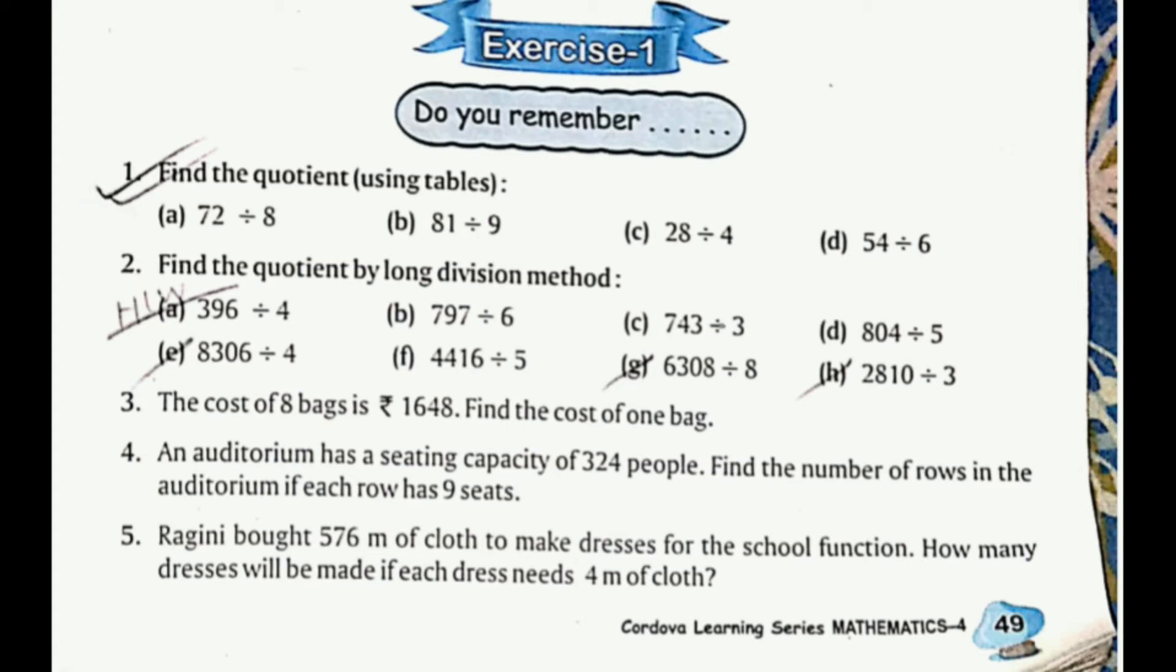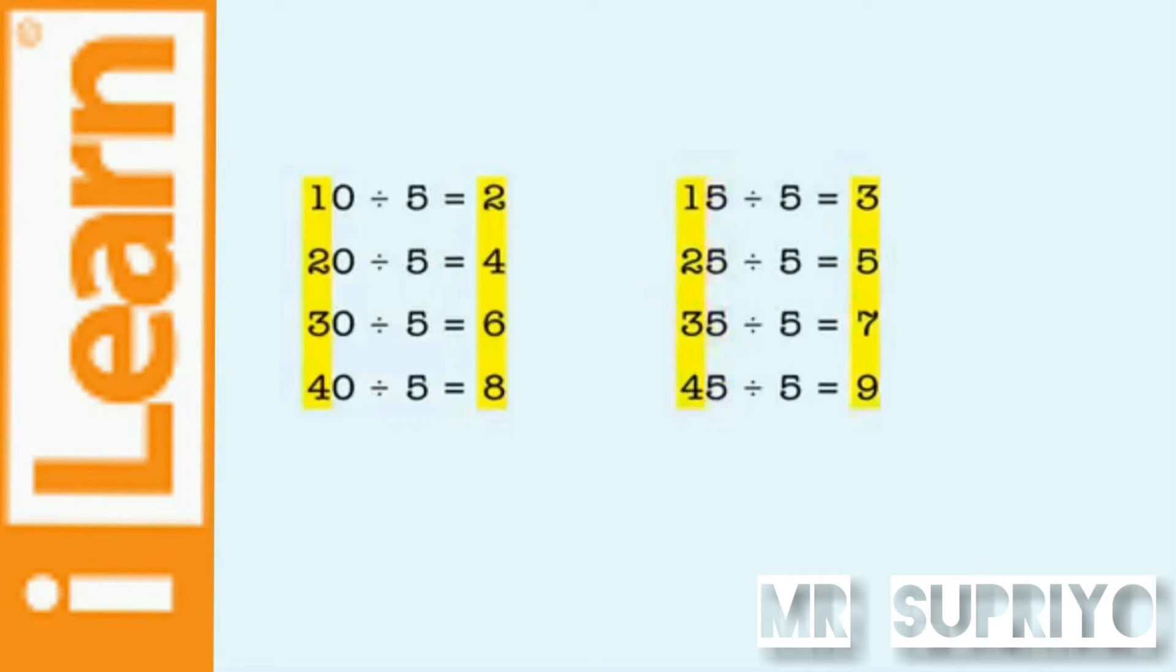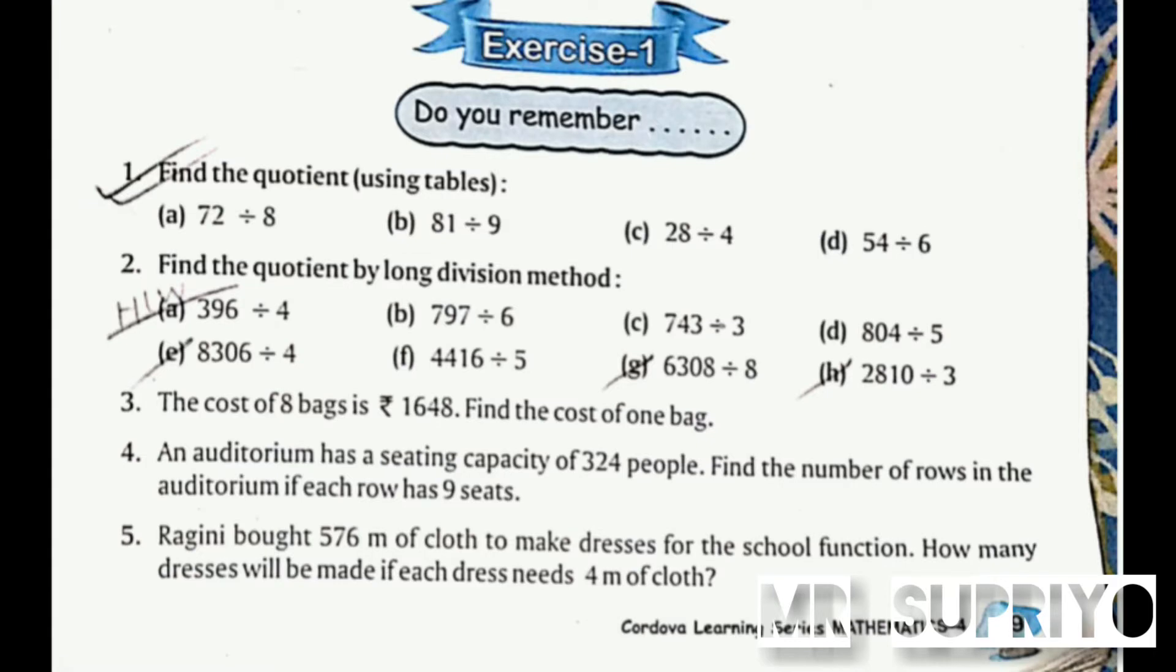Here you can see Exercise 1, page number 49. Number one: find the quotient using tables. 10 divided by 5 equals 2. 20 divided by 5 equals 4. 30 divided by 5 equals 6. 40 divided by 5 equals 8, and so on.